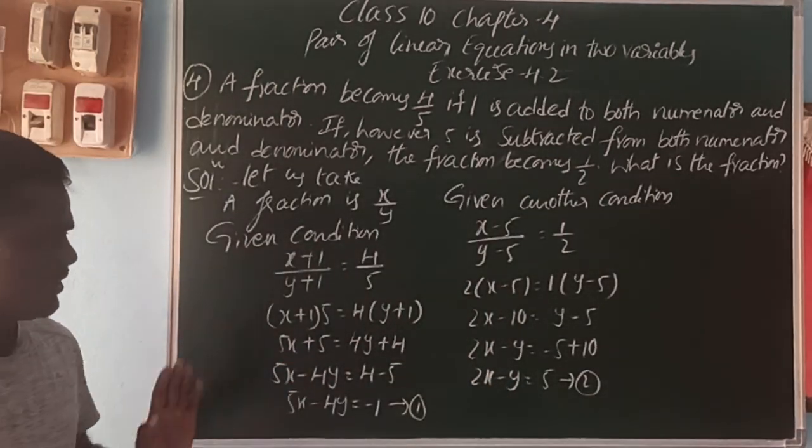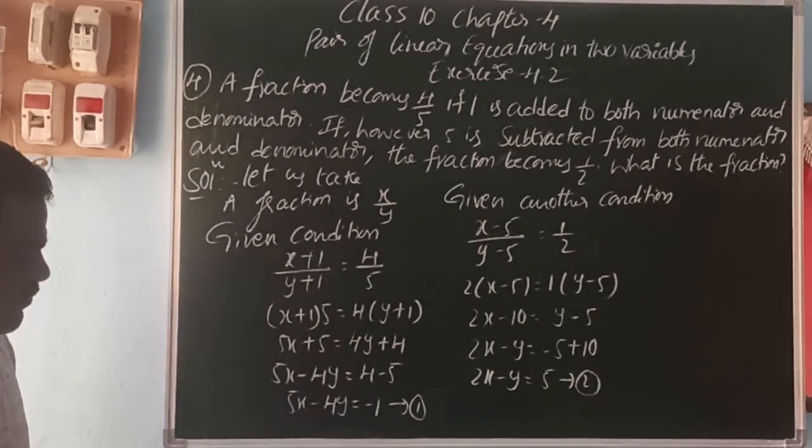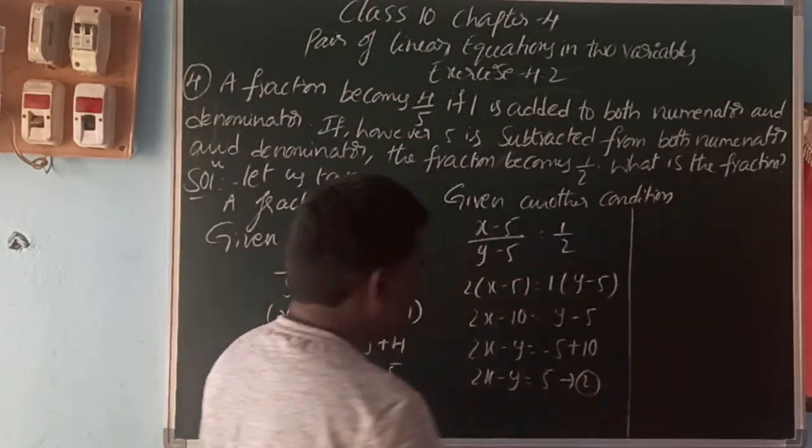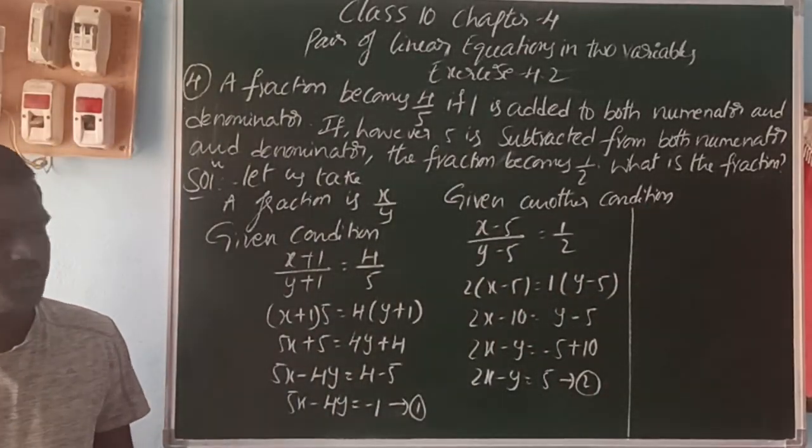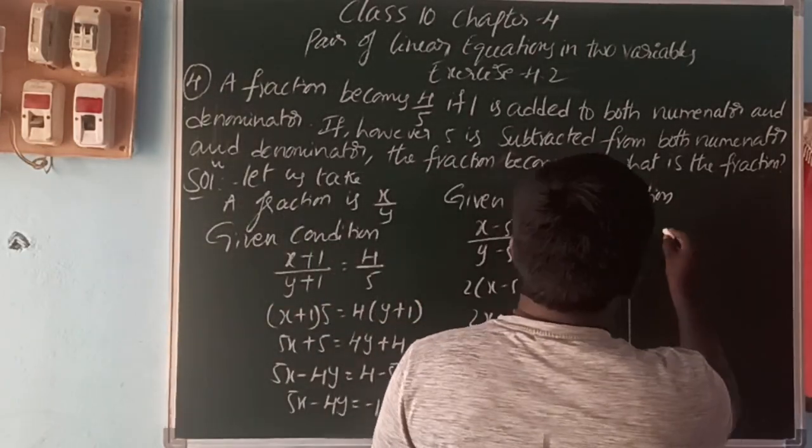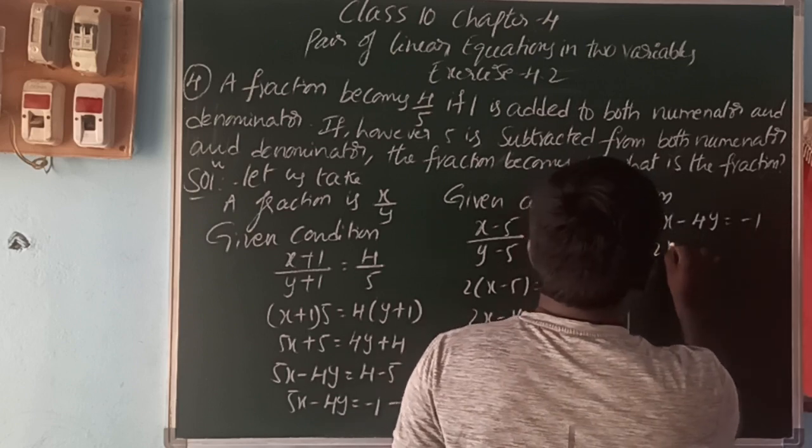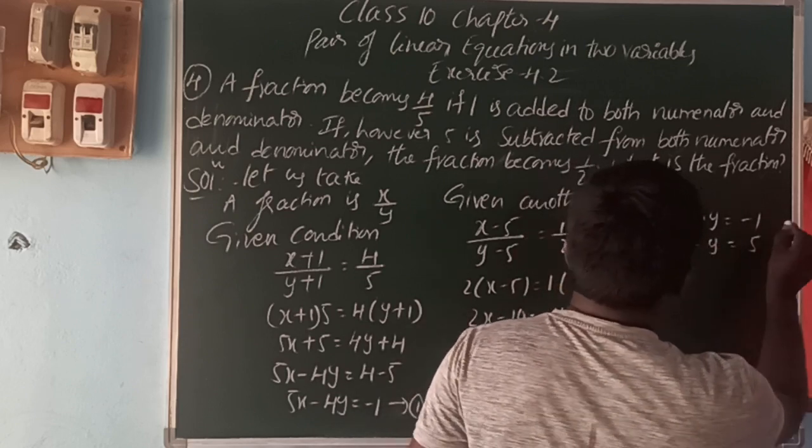So, from both 1 and 2 equations, we can find x and y values. How we can find? Either elimination method or substitution method. So, that is here, 5x minus 4y is equal to minus 1, 2x minus y is equal to 5.